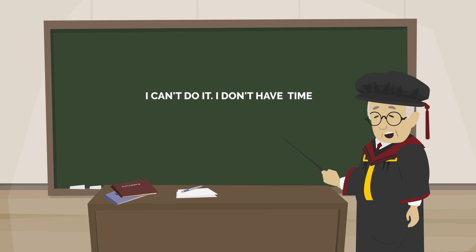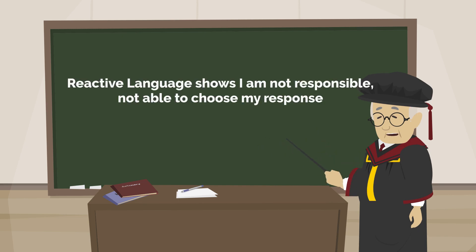I can't do it. I don't have time to do it shows the limited time controls you. If only my wife were more patient shows your wife's behavior is limiting your effectiveness. If you say I have to do it, it shows circumstances or other people are forcing you to do it. Reactive language shows I am not responsible, not able to choose my response.